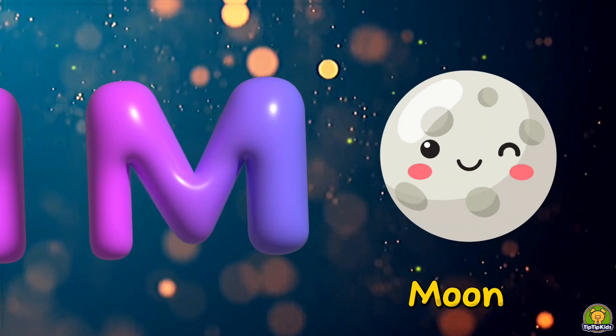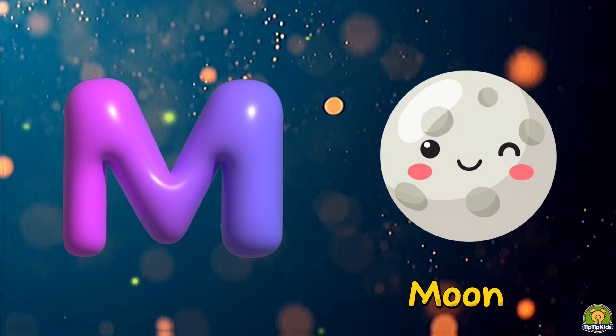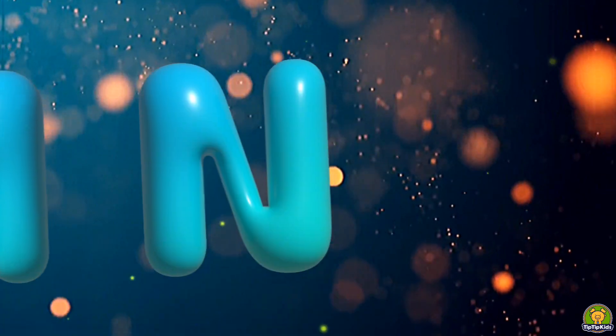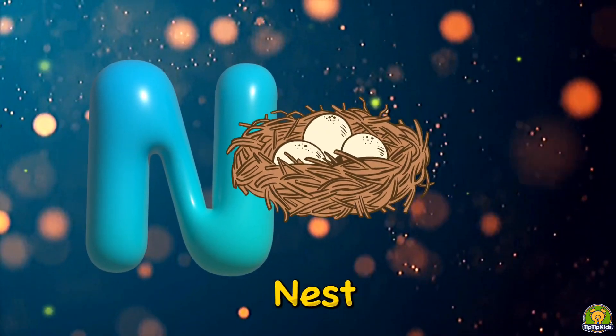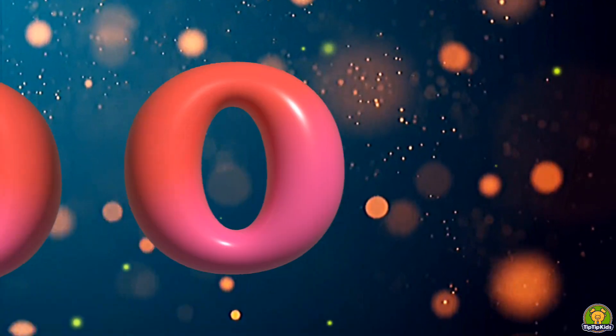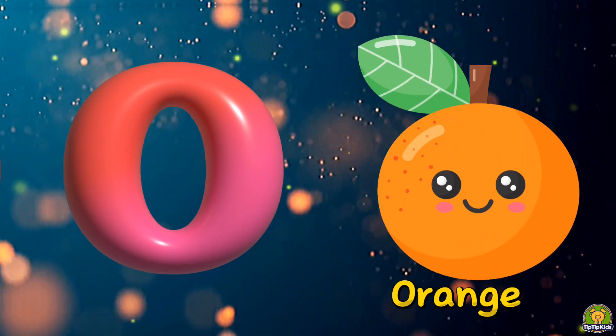M is for moon, moon, moon, moon. N is for nest, n-n-nest, nest. O is for orange, orange, orange.